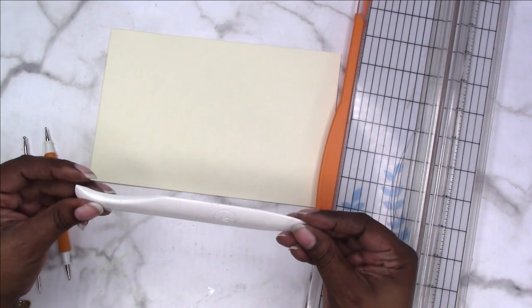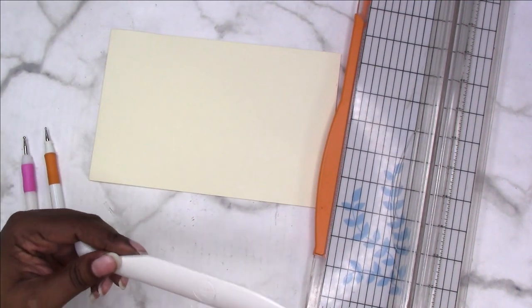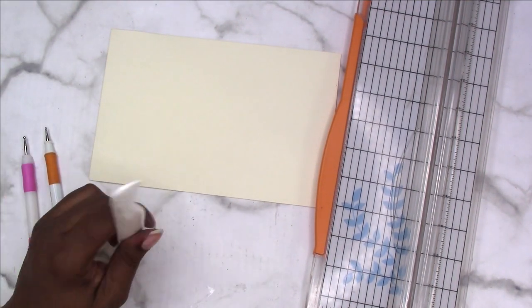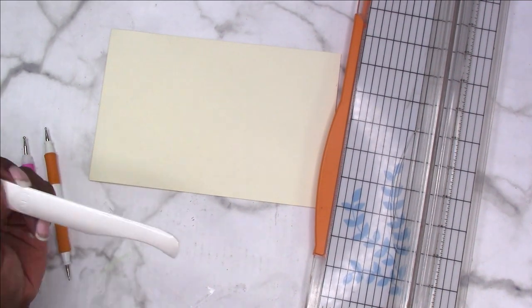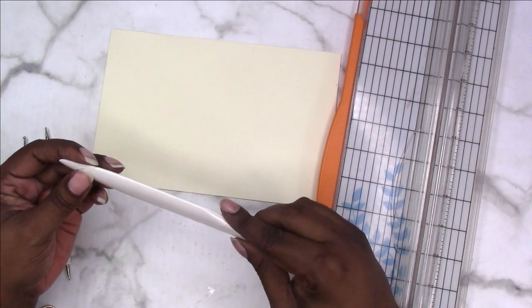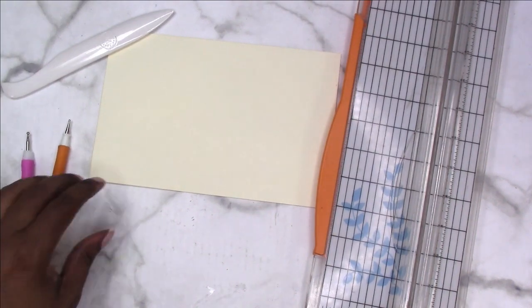I have this bone folder, which is also a Martha Stewart tool. The scoreboard I just showed you actually comes with a bone folder. I don't know what happened to mine, but I prefer this one—it's a heavier weight and I like it a lot more.